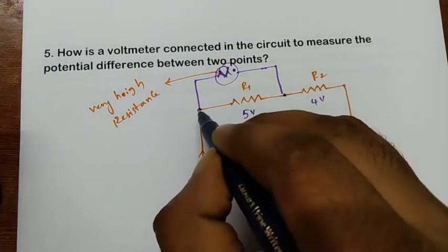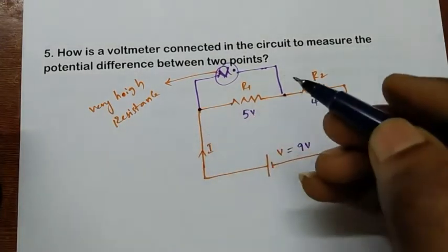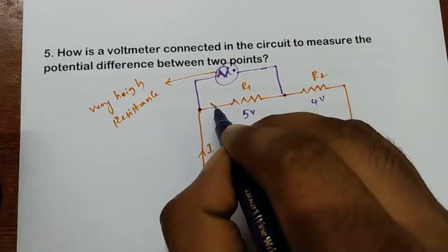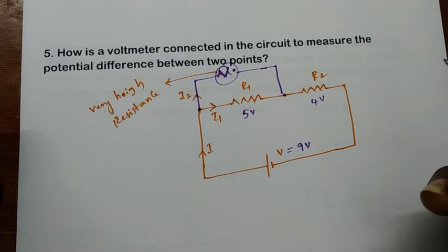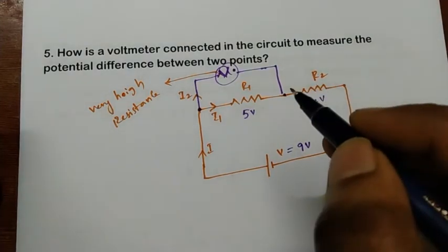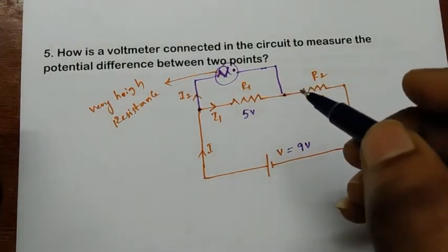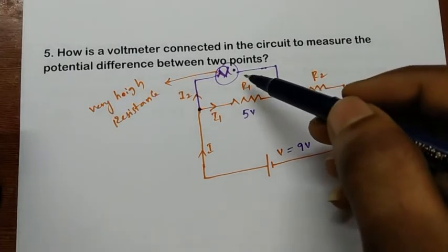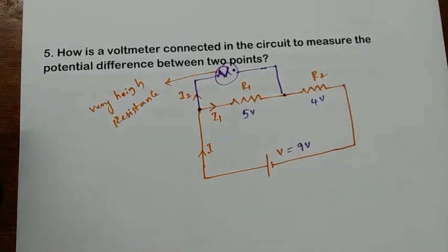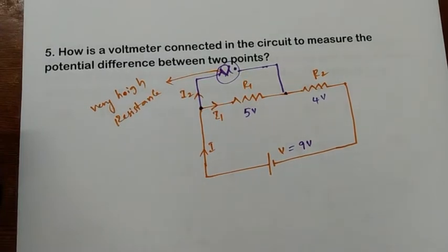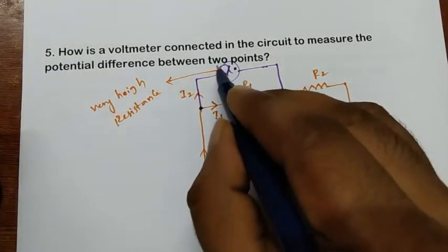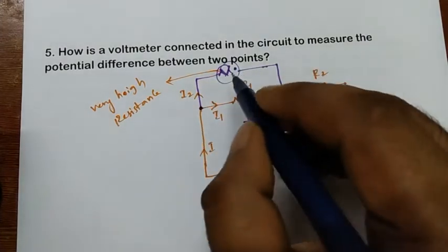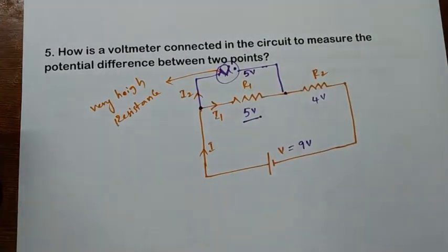At this node, according to Kirchhoff's Current Law, the current will be divided into I1 and I2. Also, in a parallel connection, the same voltage drop occurs across all branches. So if 5 volts is across R1, then the voltmeter — connected in parallel — must also have a voltage drop of 5 volts.